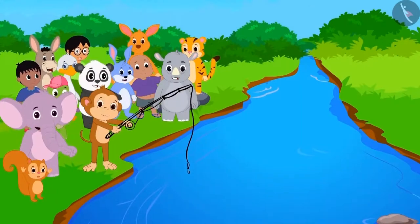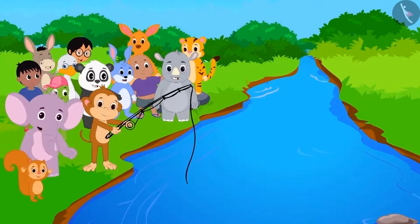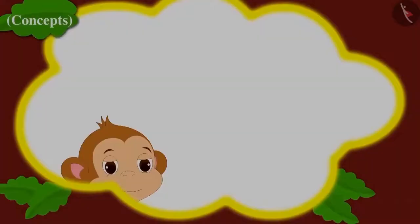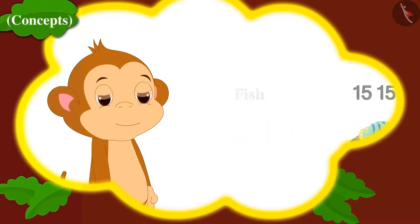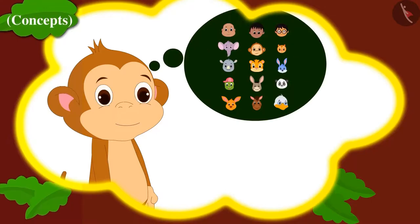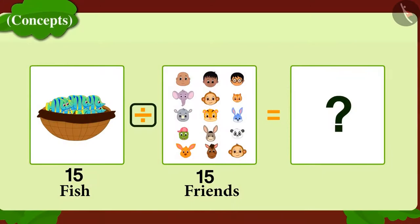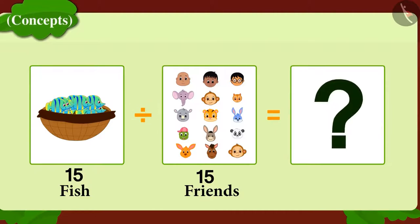All the people have reached the river bank for fishing. Babban caught 15 fish. He is thinking that he would like to divide the fish equally among 15 of his friends. To find out how many fish he will have to give to each friend, he quickly wrote down this division on a piece of paper.